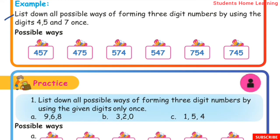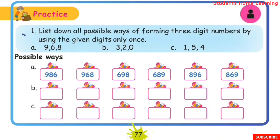Example: List down all possible ways of forming 3-digit numbers using the digits 4, 5, and 7, using each digit only once.